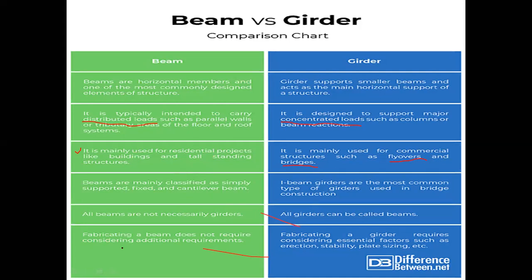Fabricating a beam does not require considering additional requirements — you don't need a special fabricating yard or industrial facility. But for girders, you definitely require a fabrication unit. Girder fabrication involves considering essential factors such as erection, non-flow stability, plate sizing, crane girders, and launching. Beams have simple requirements to fulfill, but girders require a lot of activities even for placement and erection.